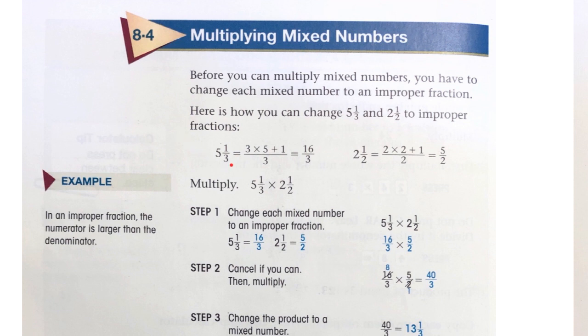We're going to have 5 times 3 plus the 1. So the denominator times the whole number plus the numerator becomes the new numerator, 16. In this case, the denominator stays the same at 3.